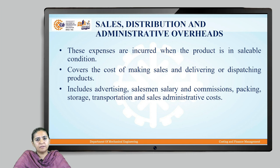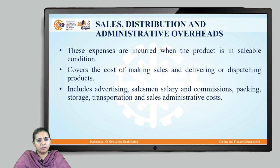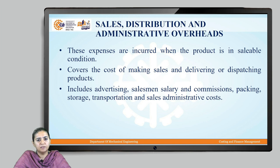The process is not completed once you manufacture the product — we still have to sell, advertise, dispatch, store, package, and transport it. All expenses incurred when the product is in a saleable condition, including costs of making sales, delivery, dispatching, advertising, salesman salary, commissions, packing, storage, transportation, and sales administrative costs, are part of the selling, distribution, and administrative overheads.